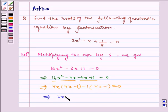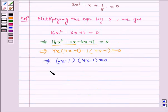This implies (4x - 1)(4x - 1) = 0, which implies 4x - 1 = 0.